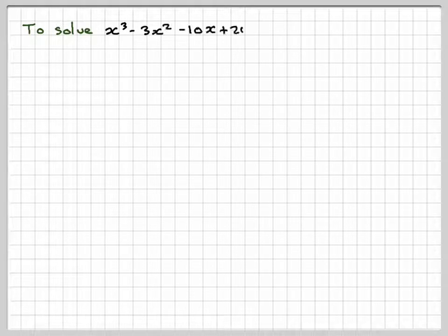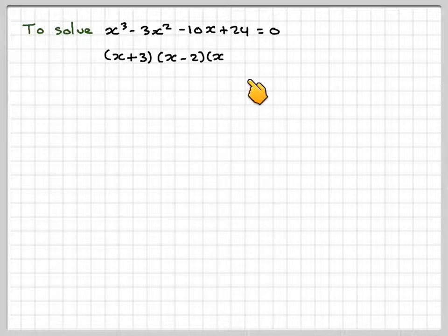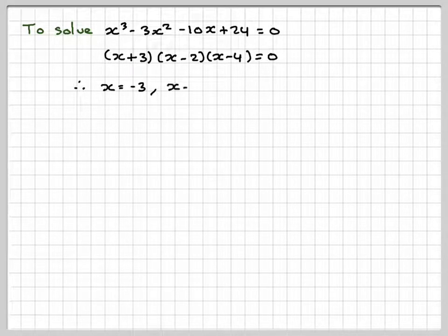So we had to now solve that equation. To solve it, we would factorize it, so we've already factorized it. And that's going to give me x = -3, x = 2, x = 4.